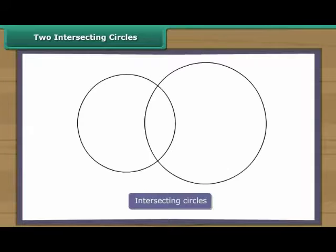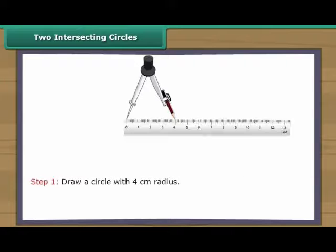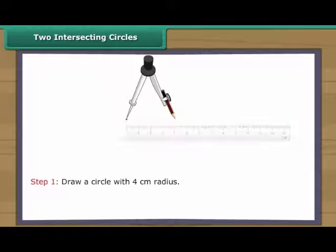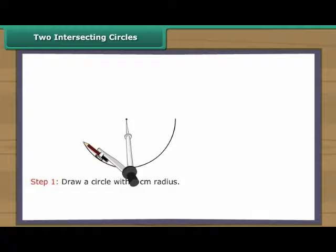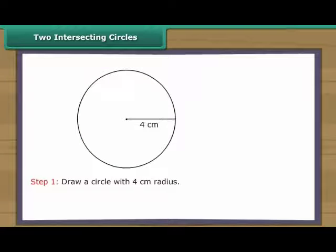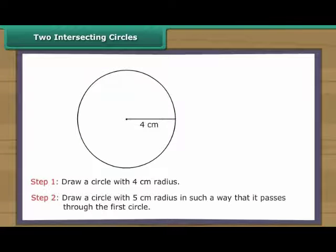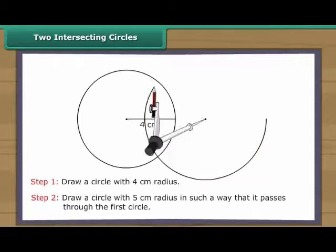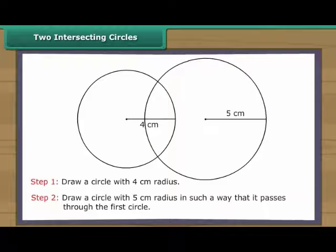Two intersecting circles. Intersecting circles may or may not have the same radii. Draw a circle with four centimetres radius. Draw a circle with five centimetres radius in such a way that it passes through the first circle. We have two intersecting circles.